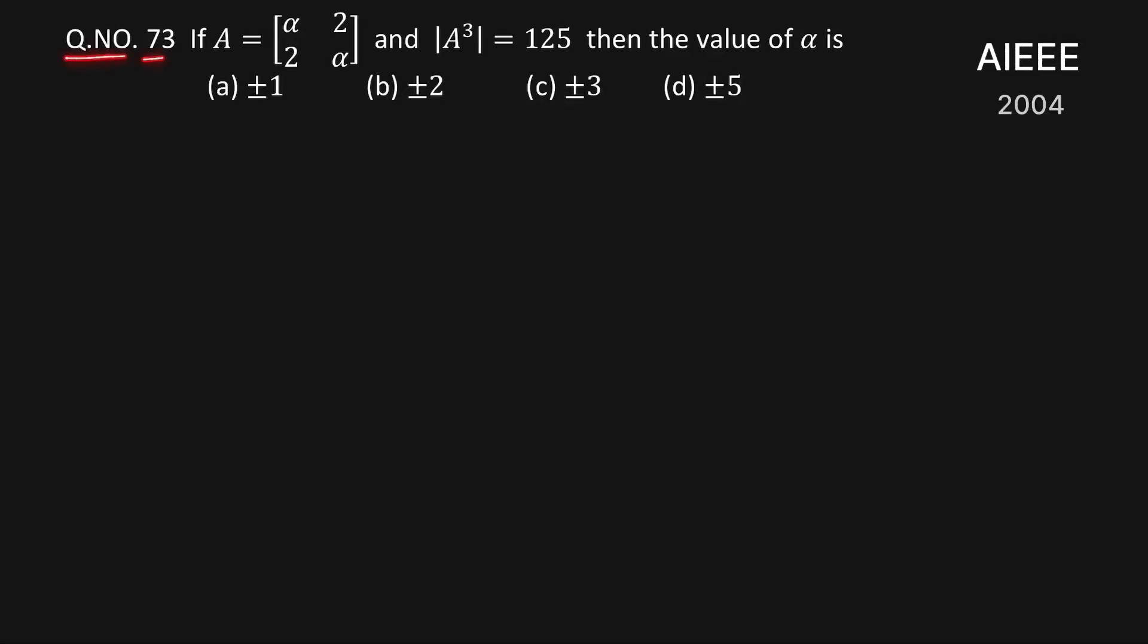Question number 73. If A is equal to matrix of alpha 2, 2 alpha and determinant of A cube which is equal to 125, then we have to find the value of alpha.